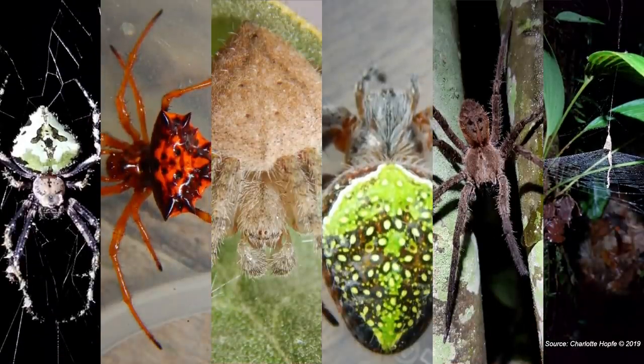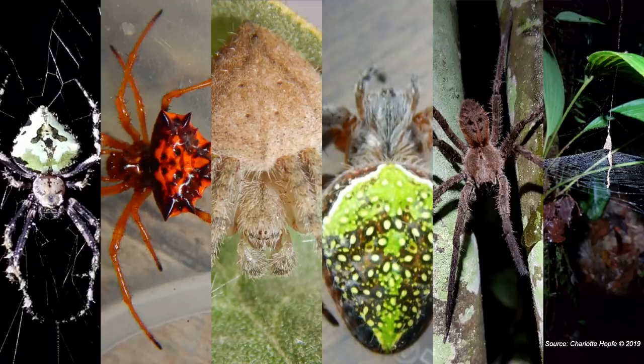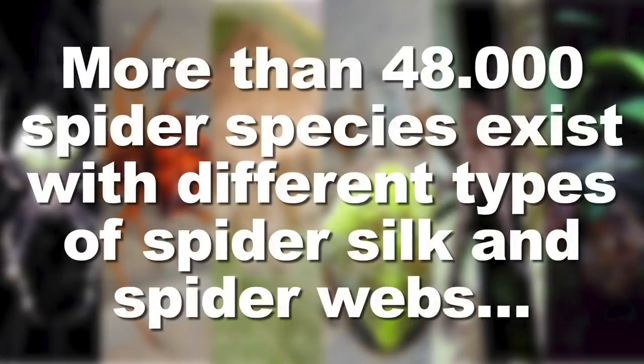Spiders are fascinating creatures. Look at the beauty of these animals. They come in different colors and sizes. We know more than 48,000 species around the world nowadays. They live in different areas of the world and produce different spider webs. This is what we're interested in.